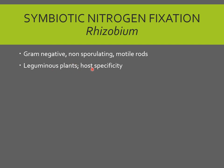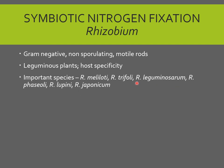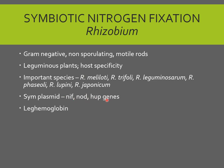Rhizobium can be isolated and grown on EMA medium, which stands for yeast extract mannitol agar. Some important species of Rhizobium are Rhizobium meliloti, Rhizobium trifolii, Rhizobium leguminosarum, Rhizobium phaseoli, japonicum, and Rhizobium lupini. They are always associated with leguminous plants and contain NIF genes, NORD genes, and HUP genes. These genes are usually present on a large plasmid called the symplasmid — sym standing for symbiotic plasmid — though in some species they are also present on the chromosome.